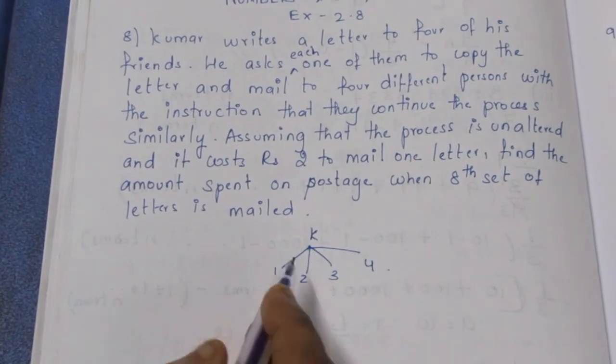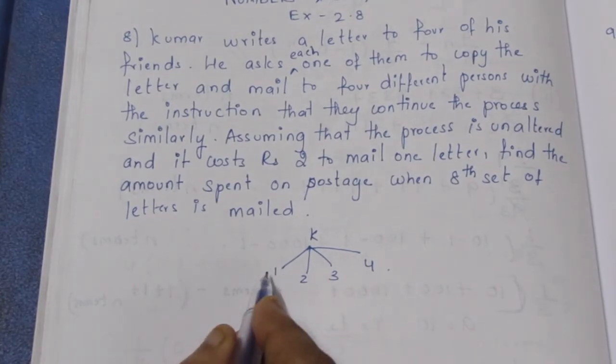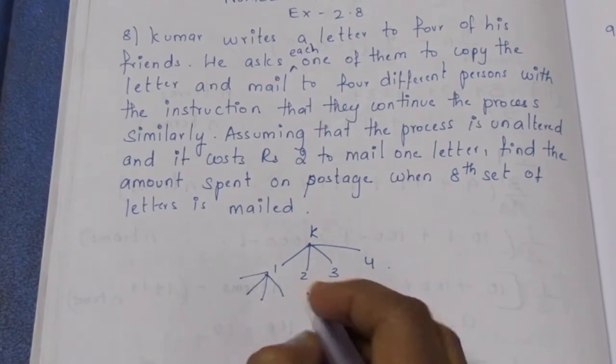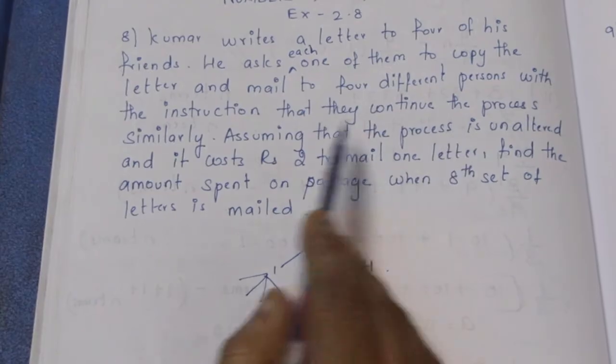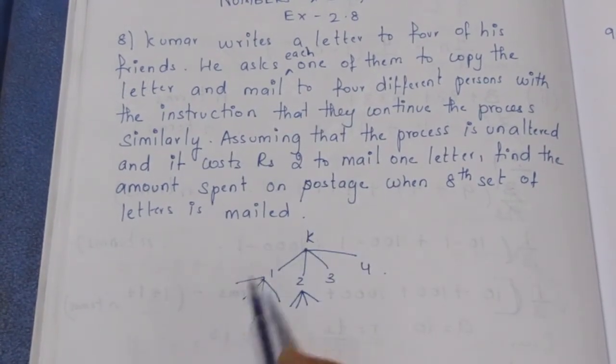Each one of them does the same with each other. He says that they have 4 letters to 4 friends. So everyone has 4 letters to 4 friends. And continue the process similarly. So everyone has 4-4 letters.